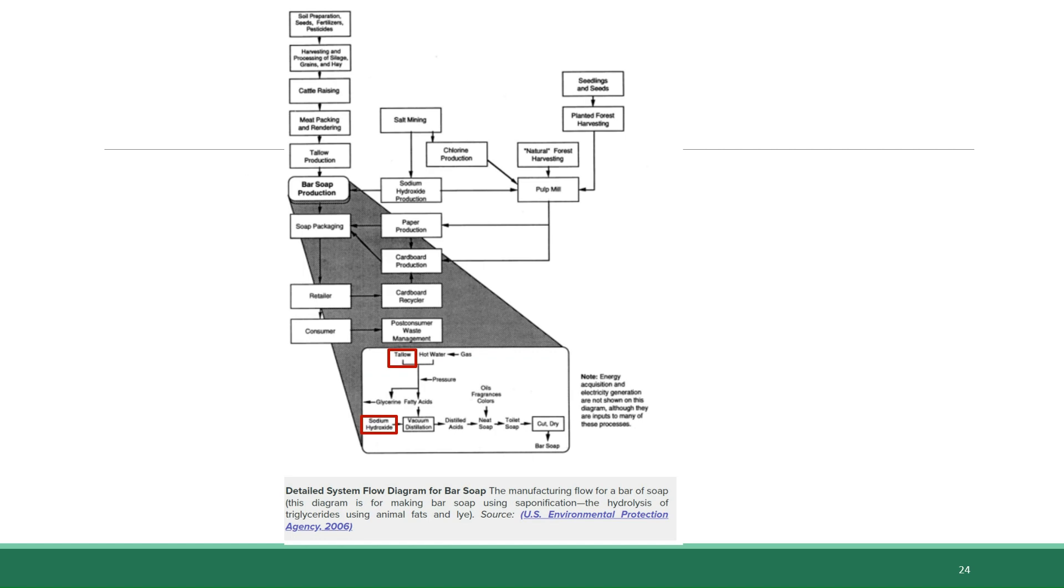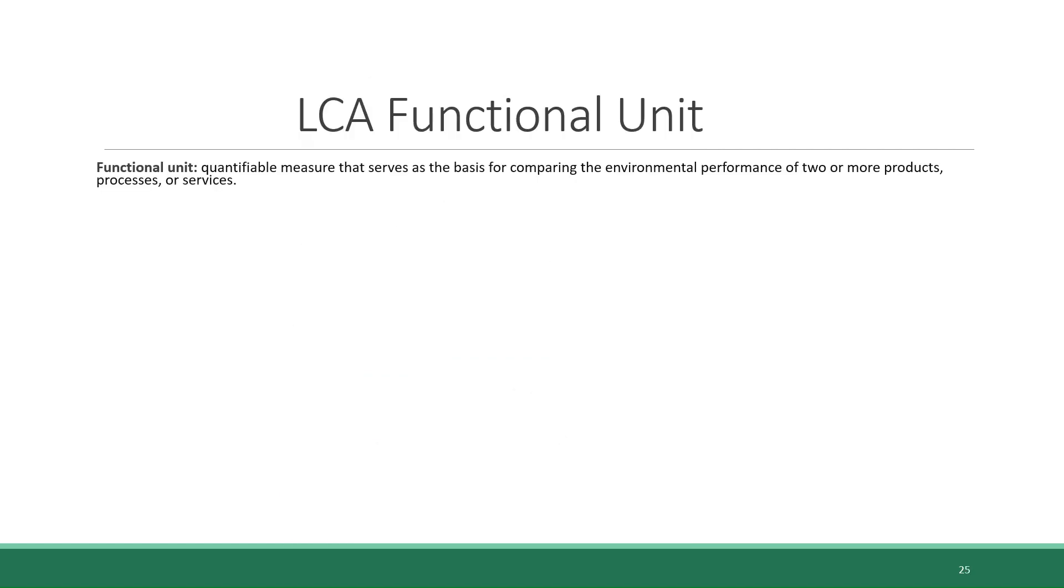For instance, machinery that is replaced only once every decade or so might be excluded from the inventory analysis due to its minimal contribution. And this brings us to a functional unit.